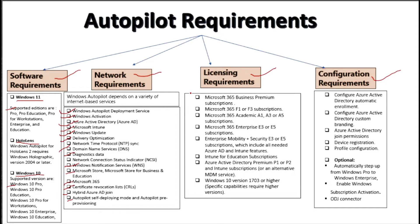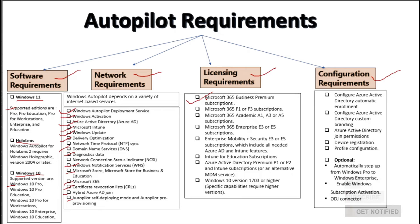The third requirement is related to licensing. When performing Autopilot we should have a supported license. Autopilot services are included in the following licensing schemes: Microsoft 365 Business Premium subscription, Microsoft 365 F1 or F3 subscription, Microsoft 365 Academic A1, A3, or A5 subscription, Microsoft 365 Enterprise E3 or E5 subscription, Enterprise Mobility + Security E3 or E5 subscription which includes all needed Azure AD and Intune features, Intune for Education subscription, Azure Active Directory P1 or P2 subscription, and Intune subscription as an alternative MDM service. Windows 10 version 1709 or higher is required, and specific capabilities may require a higher version as well.